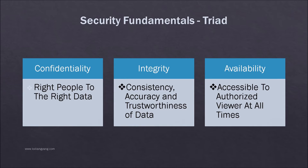Integrity refers to the ability to ensure that data is an accurate and unchanged representation of the original secure information. One type of security attack is to intercept important data and make changes to it before sending it to the intended receiver. Some types of security attacks also attempt to deny access to the appropriate user, either to inconvenience them or for a secondary effect — for example, by breaking a rival's website to make another more popular.